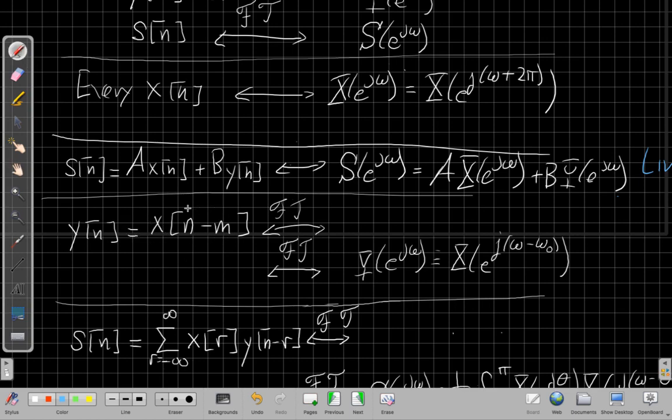Another property we'll see a lot is what happens when I delay a signal in time. If Y of N is a shifted version of X of N, well, it turns out—I'm not going to go through the derivation, you can find it in your book—but what's more important is to know that what it does is multiply by e to the minus j omega M times the same Fourier transform. So I have the same X of e to the j omega just multiplied by this complex e to the minus j omega M.